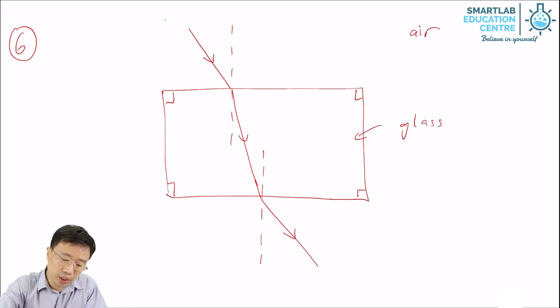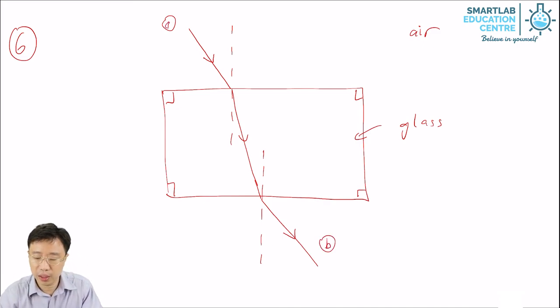Now, in this special case, where it is a rectangular block, part A and part B of the ray, they are parallel.